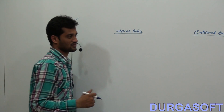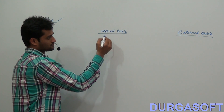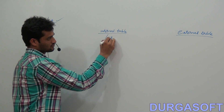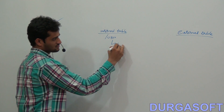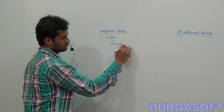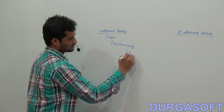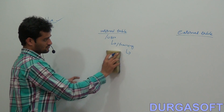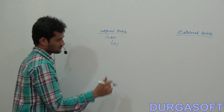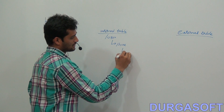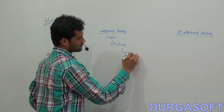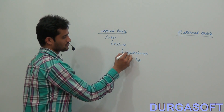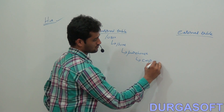For internal table: if I am creating an internal table, that table will be stored under /user/hive/warehouse. Under warehouse you will have the emp table — it is a directory.